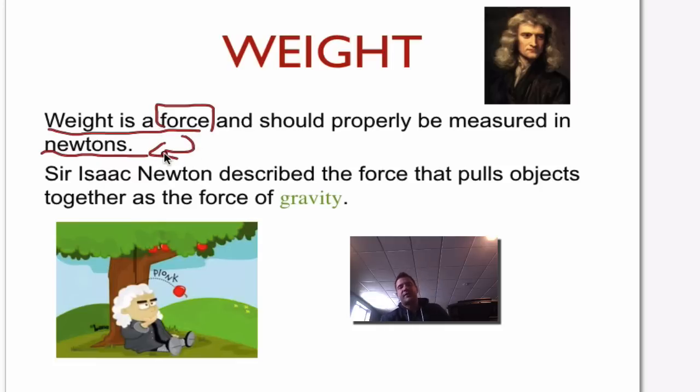There's a story that Sir Isaac Newton described force as the pull of objects together, and he called that pull gravity. He was sitting underneath an apple tree and he started to think about why do apples fall downwards? Why don't apples float or move into space or just hover in mid-air?